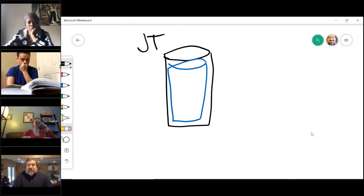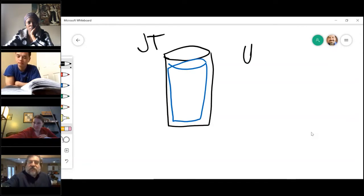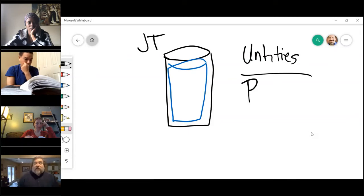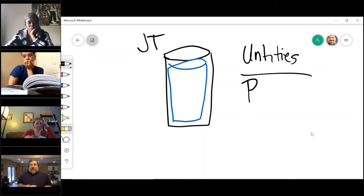And in joint tenancy we actually have four things in common and the word the book uses is unities. We have four of them. So in the tenants in common, all we had was one thing in common, that was possession. In the joint tenancy, we have four things that are in common. One is the possession that we just talked about. So like the tenants in common, joint tenants have the right to possess the property.